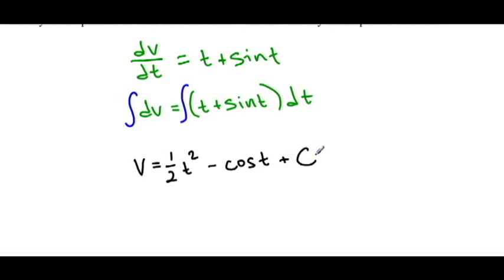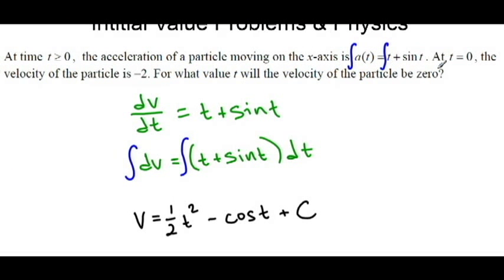Now, of course, at this point we can use our initial condition to figure out what c is. And they told us here that at time t = 0, the velocity is -2. In other words, v(0) = -2.